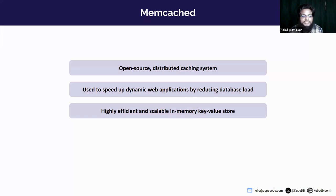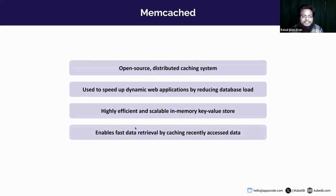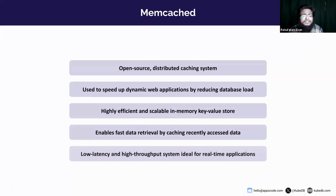Memcached enables fast data retrieval by caching recently accessed data in memory, enabling instant retrieval and reducing the time spent fetching data from primary data sources. It has a low latency and high throughput system which is ideal for real-time applications. It improves application performance by reducing database load and delivering fast retrieval.